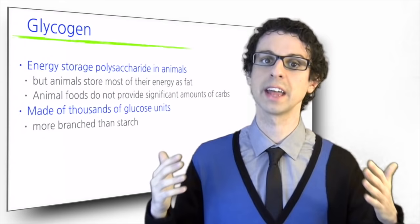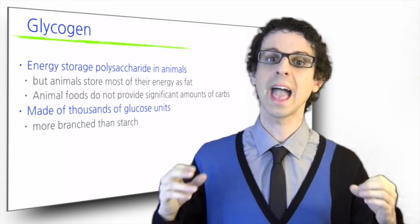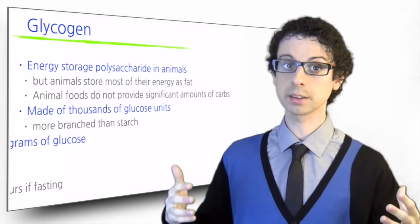However, contrary to plants, animals do not store a lot of energy as carbohydrates, and instead prefer to store their energy in the form of fat. For this reason, while plant foods can provide a lot of carbohydrates as starch, animal foods do not provide significant amounts of carbohydrates, because they have just a little glycogen, and most of it breaks down after the animal dies.